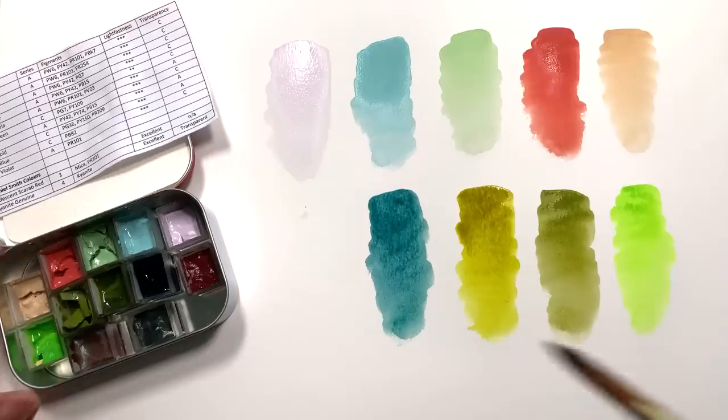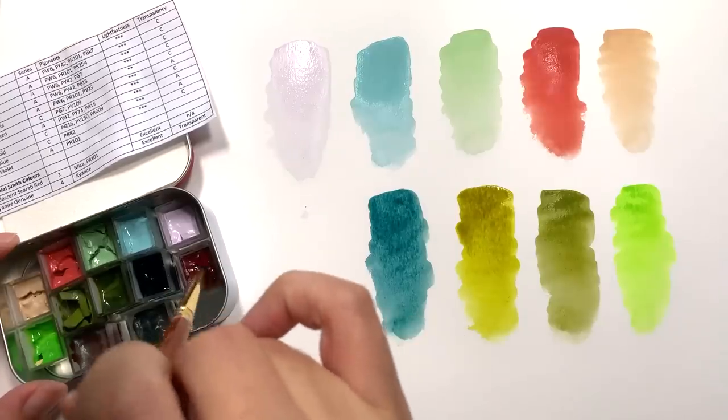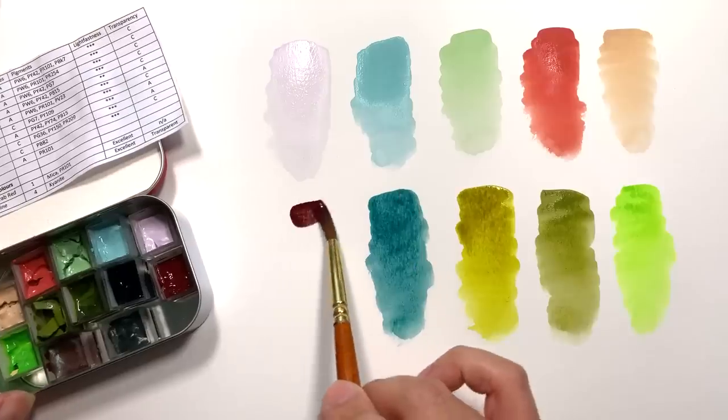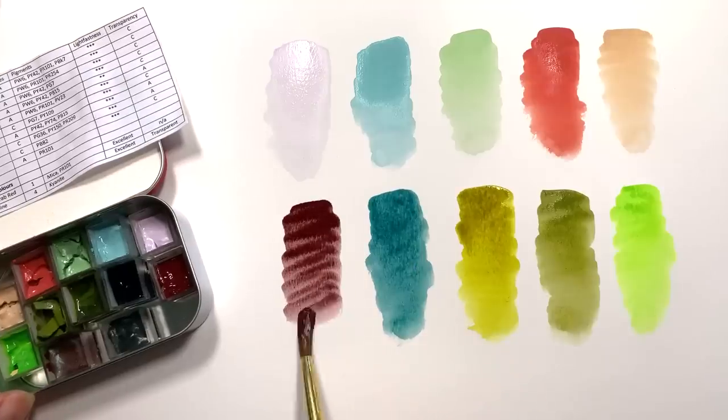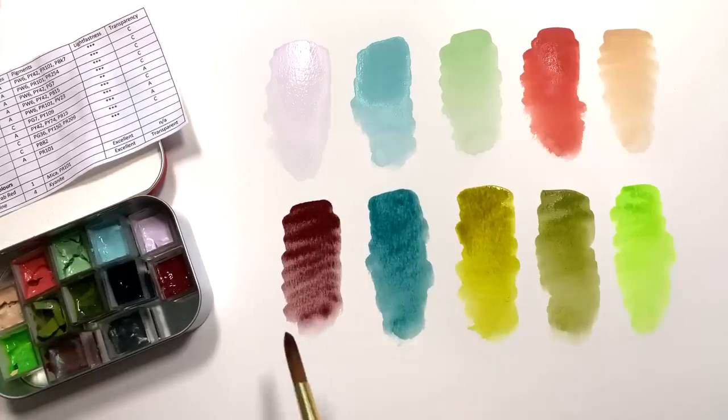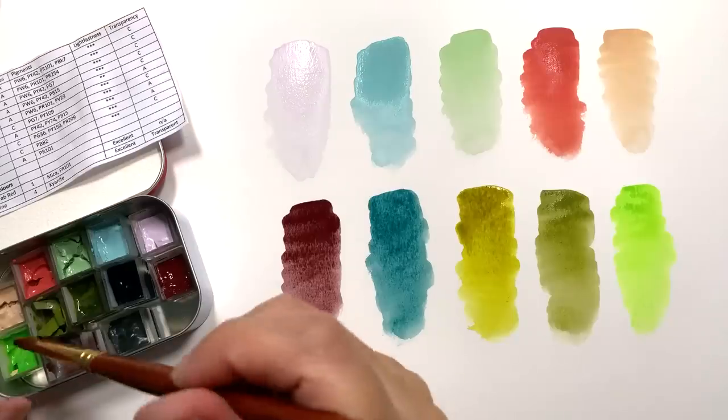And finally, for the Turner's color, I have Mars violet, which is a very strong color, very similar to Sennelier's Caput Mortum.